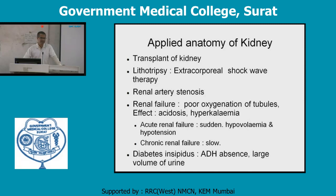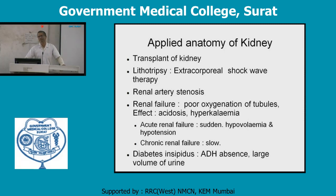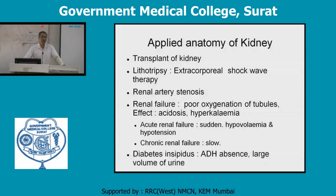Diabetes insipidus is characterized by increased thirst (polydipsia) and increased urine output (polyuria). It is not related to diabetes mellitus. It is caused by absence of ADH (antidiuretic hormone) from the pituitary, which leads to no reabsorption of water in the distal convoluted tubule, resulting in increased urine output and compensatory increased thirst.